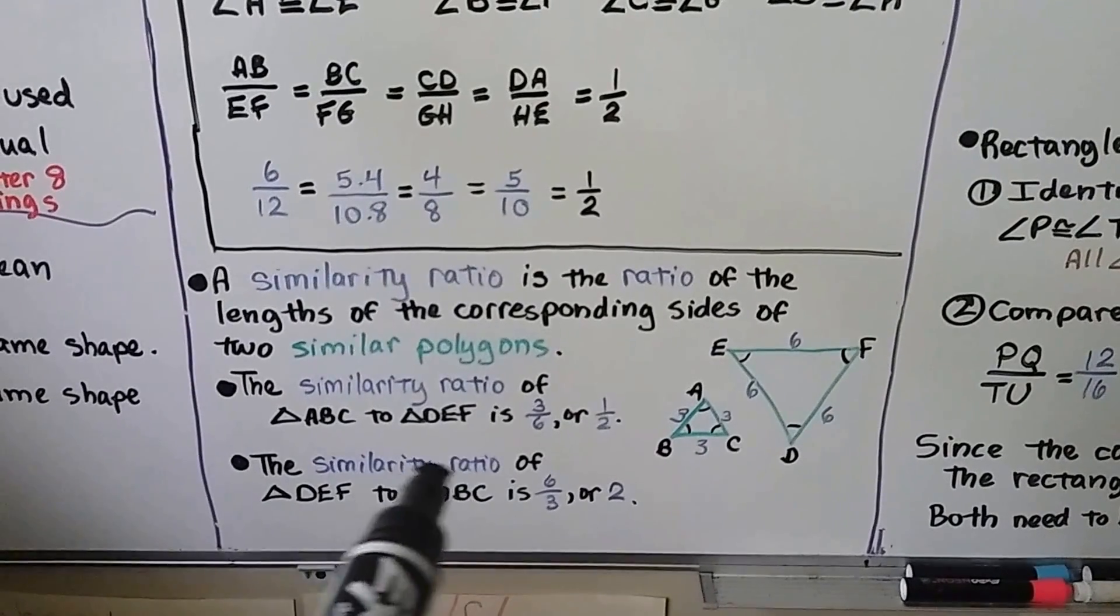Let's compare the corresponding sides. AB, that's 20, corresponds to DE, that's 15. 20 over 15 simplifies to 4 thirds. BC corresponds to EF, so 24 over 18 simplifies to 4 thirds. And AC, this 16, corresponds to DF, this 12, which simplifies to 4 thirds. So the similarity ratio is 4 thirds, and triangle ABC is similar to triangle DEF.